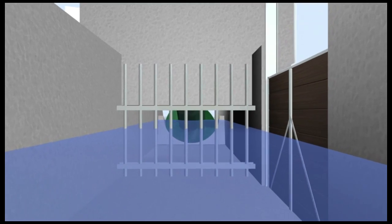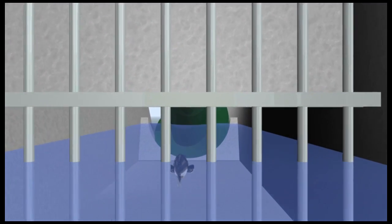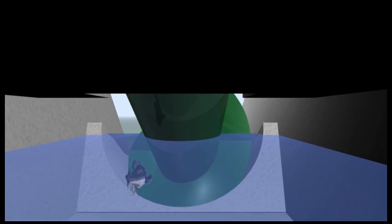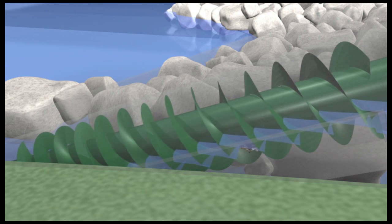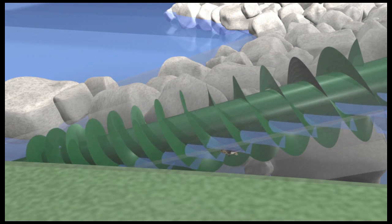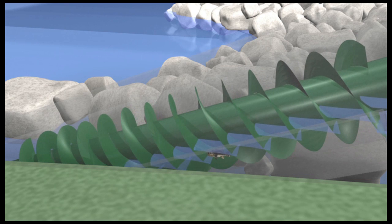The flow enters the fish-friendly screw turbine. This causes the screw to rotate between the upper and lower bearings. The rotating screw turns the gear unit which in turn rotates the generator.